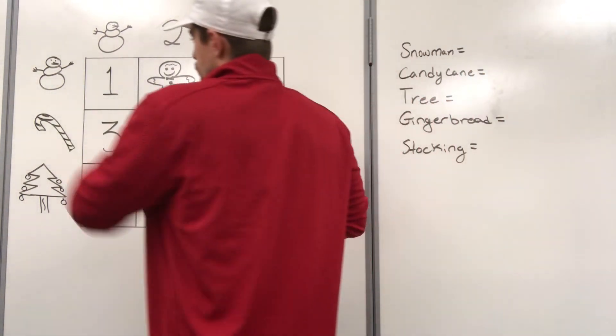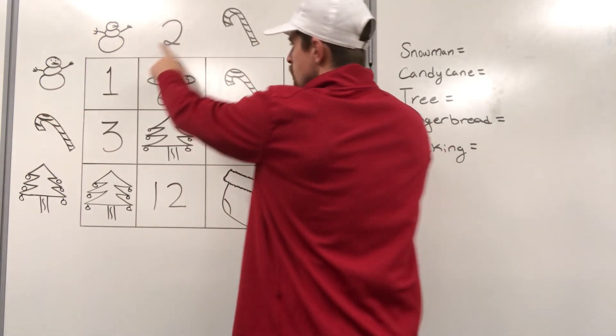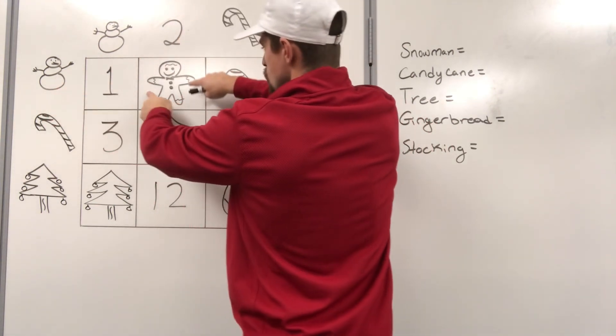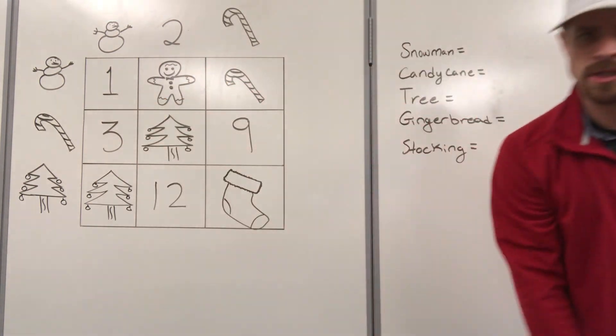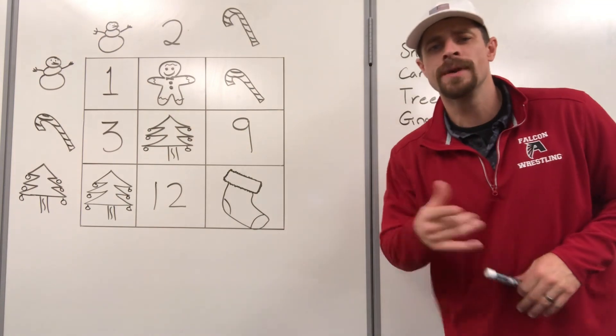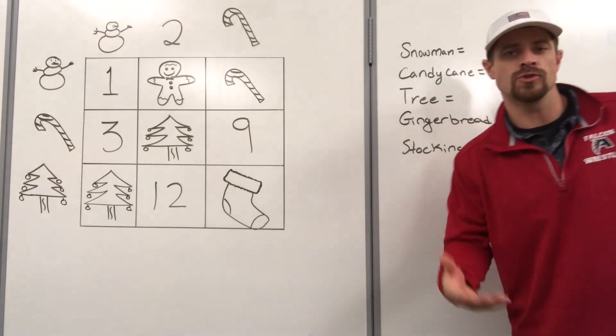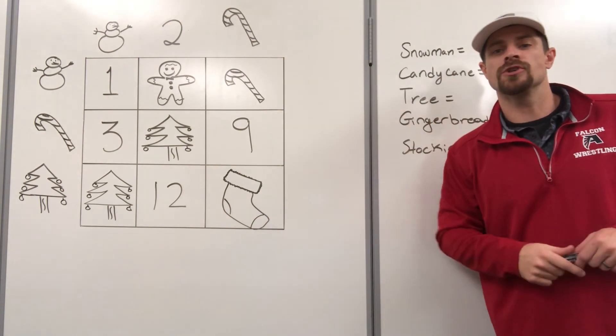So again, looks like a snowman times two. Snowman times two makes a gingerbread. Interesting. So we've got to start working through this puzzle, figuring out what each and every individual picture means. I would start making a list, give your values over here as you get them so that you can check and make sure you're getting them correct.